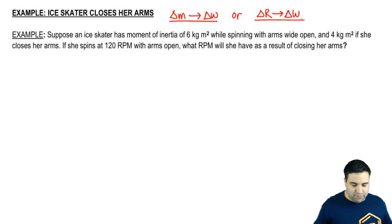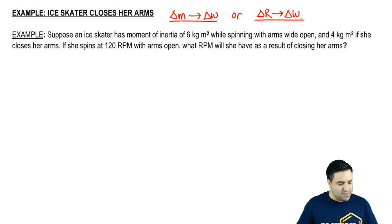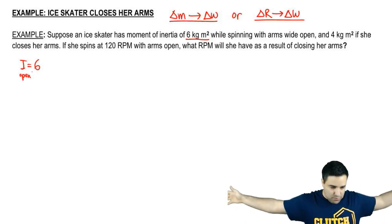Those are the two types that you have to look out for. So here we have an ice skater that has a moment of inertia of 6, so I equals 6 when she spins with her arms open.